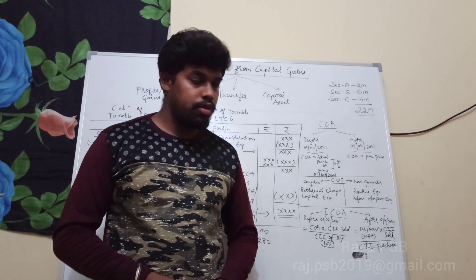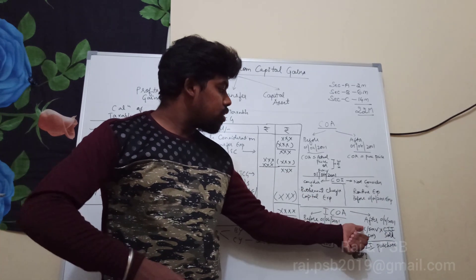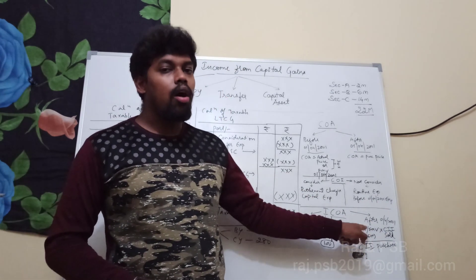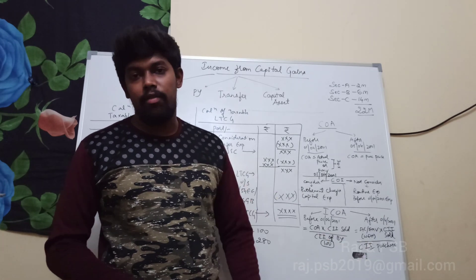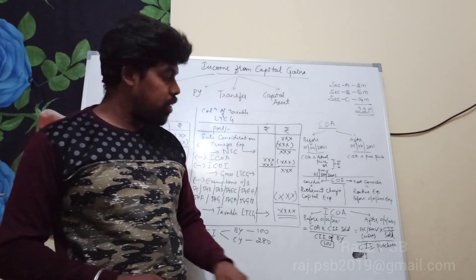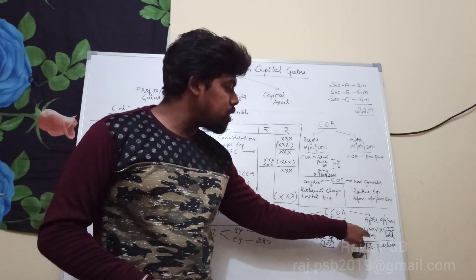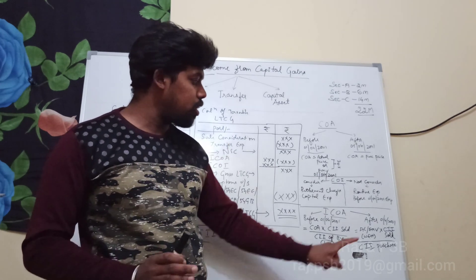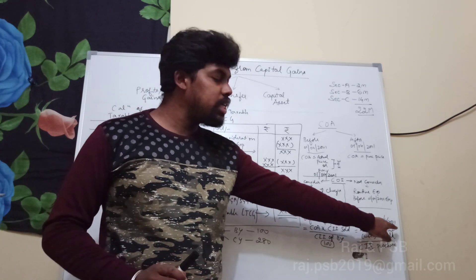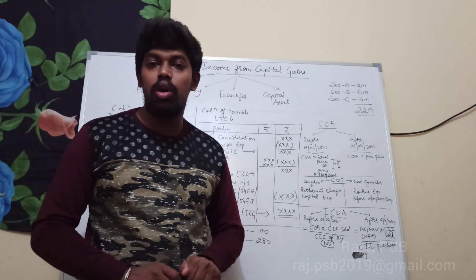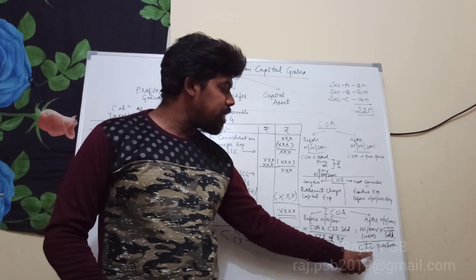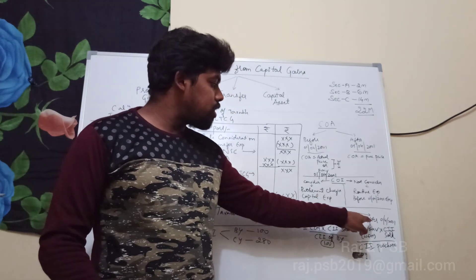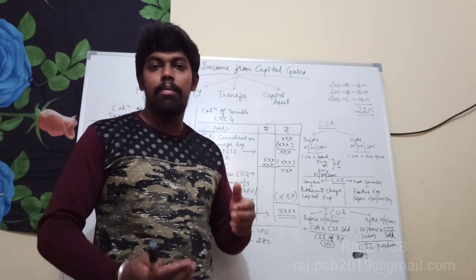For assets purchased after 1/4/2001: take the actual cost or fair market value as of 1/4/2001, whichever is higher, and multiply by CII of the sold year, divided by CII of the purchase year. Since it is after 1/4/2001, the CII of the purchase year can be taken from the prescribed table.